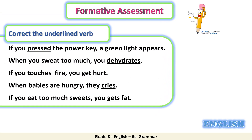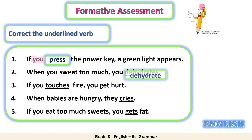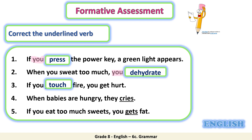In order to make sure you understood the lesson well, let's have a quick assessment. All you have to do is read the sentences and correct the underlined verb. Now pause the video and start. Let's check the answers: number one — press, because the subject is 'you'. Number two — dehydrate. Number three — touch. Number four — cry. Last one — get. Excellent job grade eight, I'm sure you got them all correct!